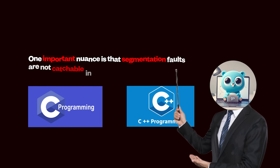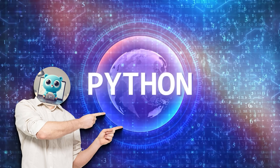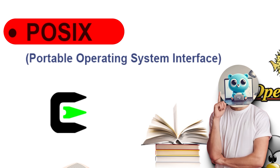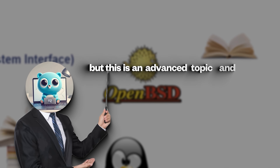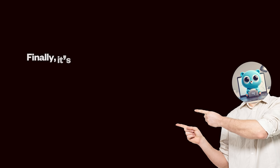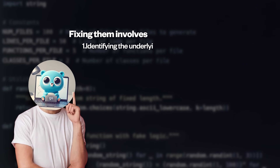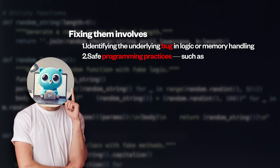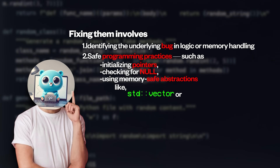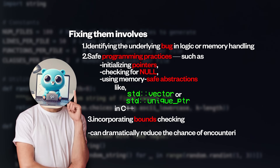One more important nuance is that segmentation faults are not catchable in standard C or C++ code. Unlike exceptions in languages like Python or Java, a segfault usually cannot be handled gracefully. However, in POSIX systems you can install a signal handler for SIGSEGV — but this is an advanced topic, mostly used in sandboxing or low-level system tools. Finally, segmentation faults are a symptom, not a root cause. Fixing them involves identifying the underlying bug in logic or memory handling, initializing pointers, checking for null, and using memory-safe abstractions like std::vector or std::unique_ptr in C++.